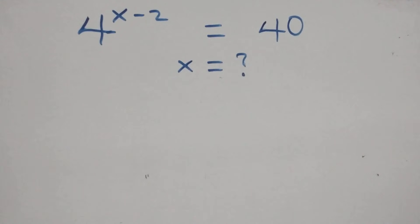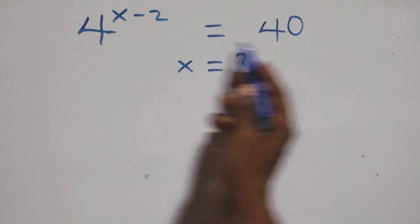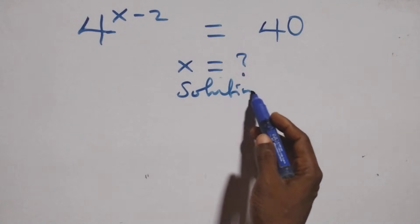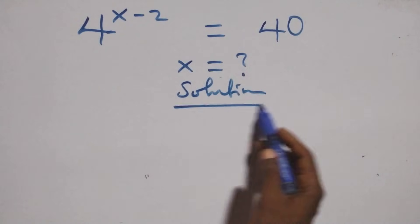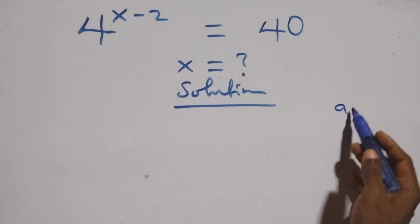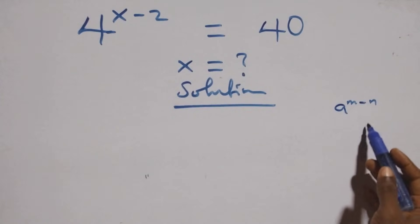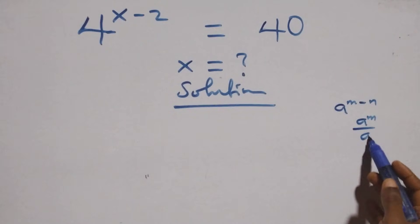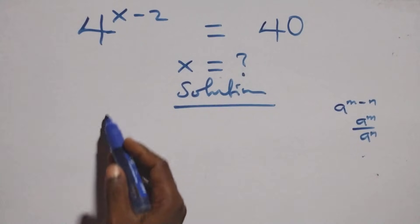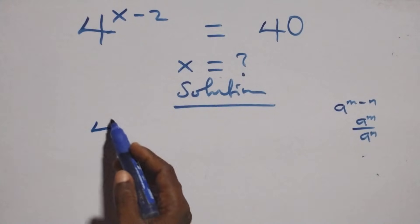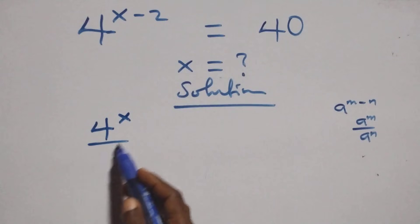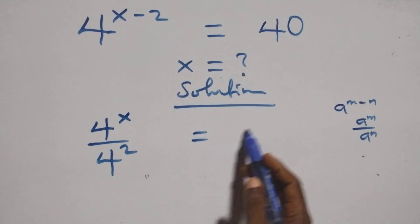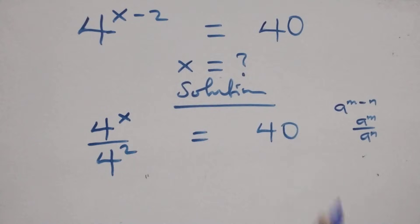Hello y'all, welcome! Here's how to solve this nice exponential equation. What we have is a raised to power n minus n, which is the same as a raised to power n over a raised to power n. Here we have 4 raised to power x over 4 squared equals 40.